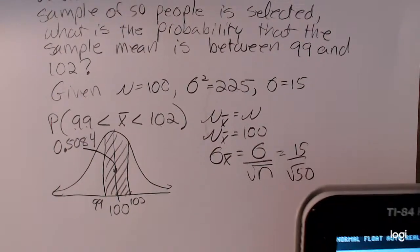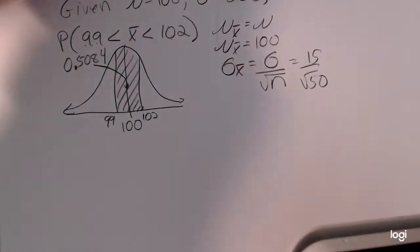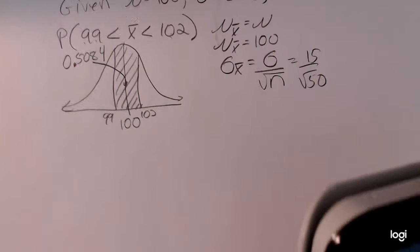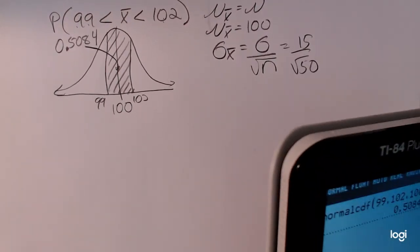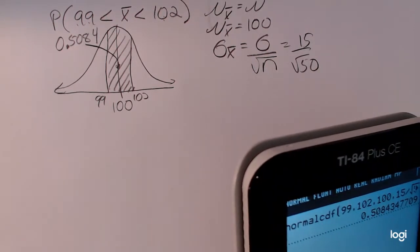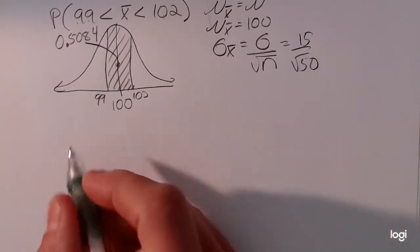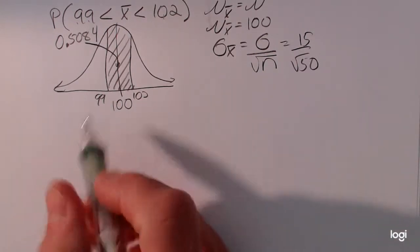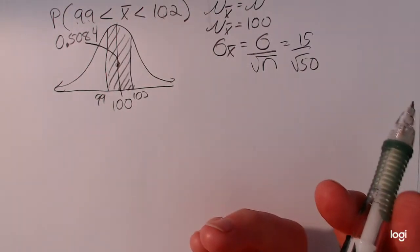So one thing to keep in mind is that this is not finding the probability that you randomly select a single IQ score between 99 and 102. This is the probability of getting a sample mean between 99 and 102 based on a sample size of 50. So for comparison, we could look at what is the probability of getting an individual IQ score between 99 and 102.